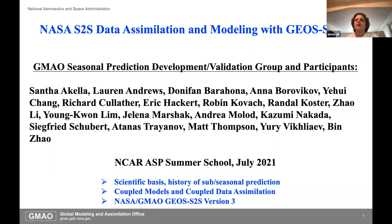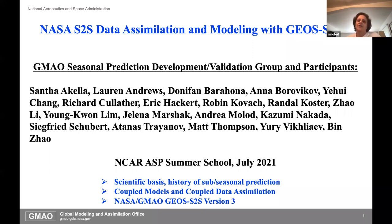GEOS is the general name of GMAO's Global Earth Observing System Model. We have the GEOS S2S system version three, which is our latest release. I'm going to give you my take—it will repeat some of what others have said—on the scientific basis and the history of subseasonal and seasonal prediction. I'll talk about the back and forth between coupled models and coupled data assimilation and the motivations behind it.